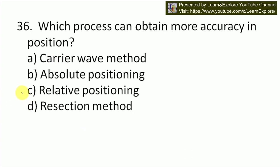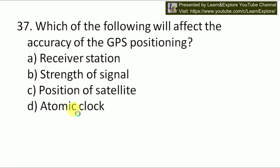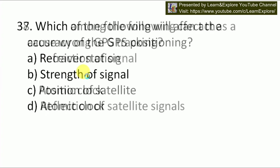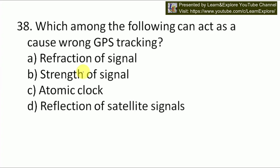Which process can obtain more accuracy in position? That is relative position — our answer will be C. Next question: which of the following will affect the accuracy of the GPS position — receiver station, signal strength, position of satellite, or atomic clock? GPS accuracy depends upon the receiver station and the atmospheric condition. In case of a dull atmosphere, the information transmitted cannot reach the receiver fully. Receiver station affects the accuracy of the GPS position.